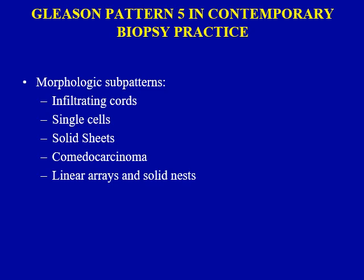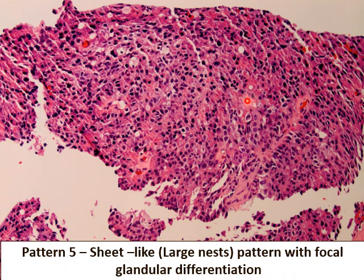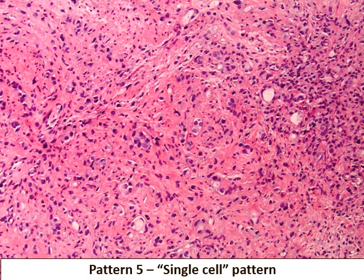Next, we move to Gleason pattern five, which is also quite heterogeneous with several morphologic sub-patterns. Here is an example of a sheet-like or large nest growth pattern — you can barely see any glandular differentiation, and it is made up of almost solid nests. Here is another example showing focal glandular differentiation, which is acceptable for grading as pattern five if overall you are dealing with a large nest pattern. Here is an example of a cord-like or cylinder type of pattern, and here is an example showing numerous single cells characteristic of single-cell Gleason pattern five.